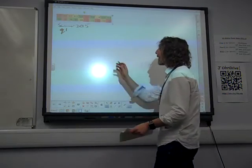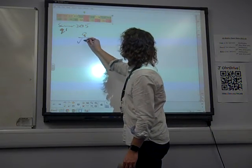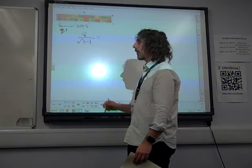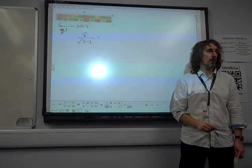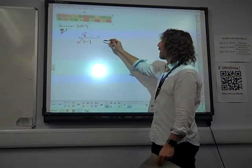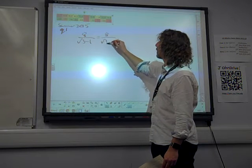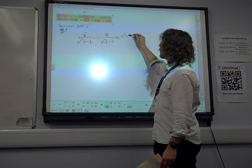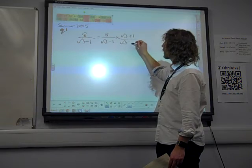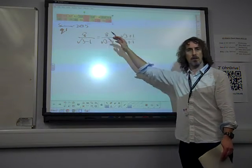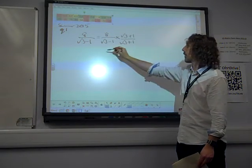Express 8 over root 3 minus 1 in the form that they want. Well, of course, we know that we're going to multiply top and bottom by root 3 plus 1. Make sure that you multiply top and bottom. Don't just do it for the bottom line. Don't just write it once because we multiply the whole thing.